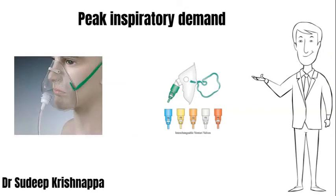A Venturi mask generates a total flow that is generally far in excess of peak inspiratory demand across a wide range of tidal volumes, respiratory rates, and I:E ratios. There is no further need for additional room air to be entrained, as the entire inspiratory demand is met by the flow generated by the Venturi device. As a result, the FiO2 remains constant.